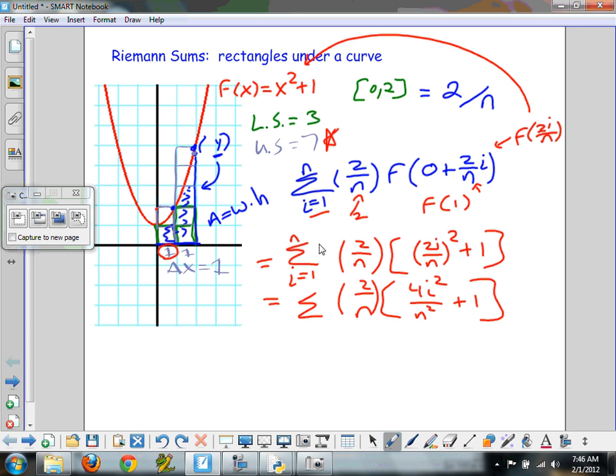Let's go ahead and distribute the 2 over n. I've seen books do different styles. I tend to get it all grouped together first. So I'm going to distribute. Now I've got 8i squared over n cubed plus 2 over n. And don't forget the rules of summation. We are going to bring that summation over as well. So now I'm looking at summing up both of these items.